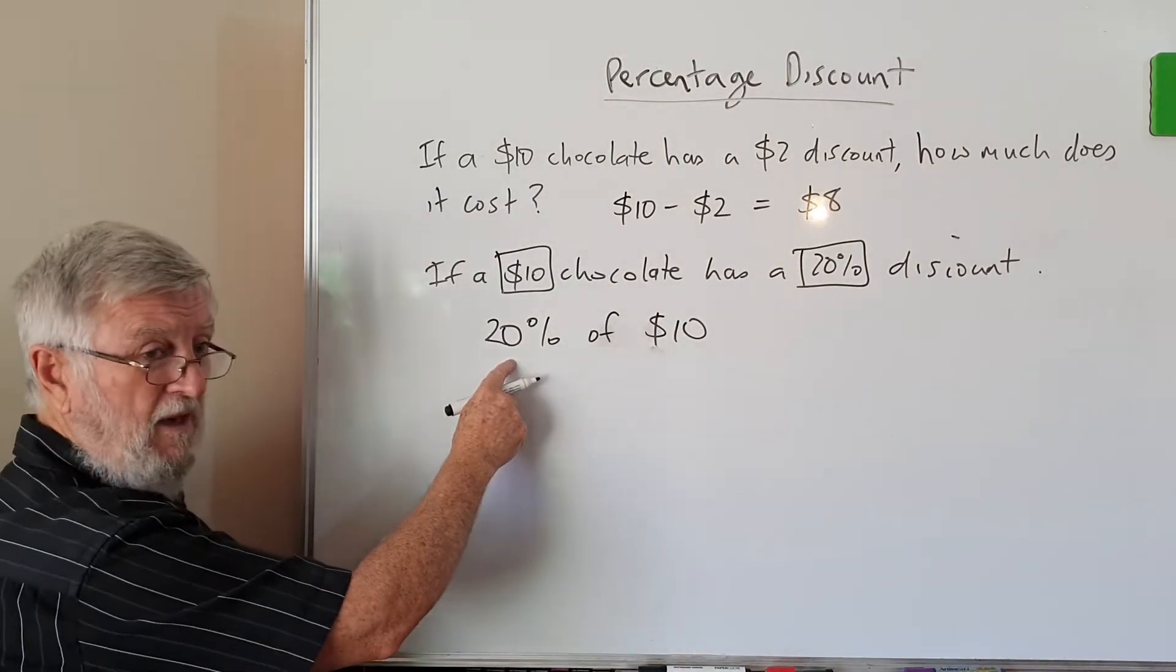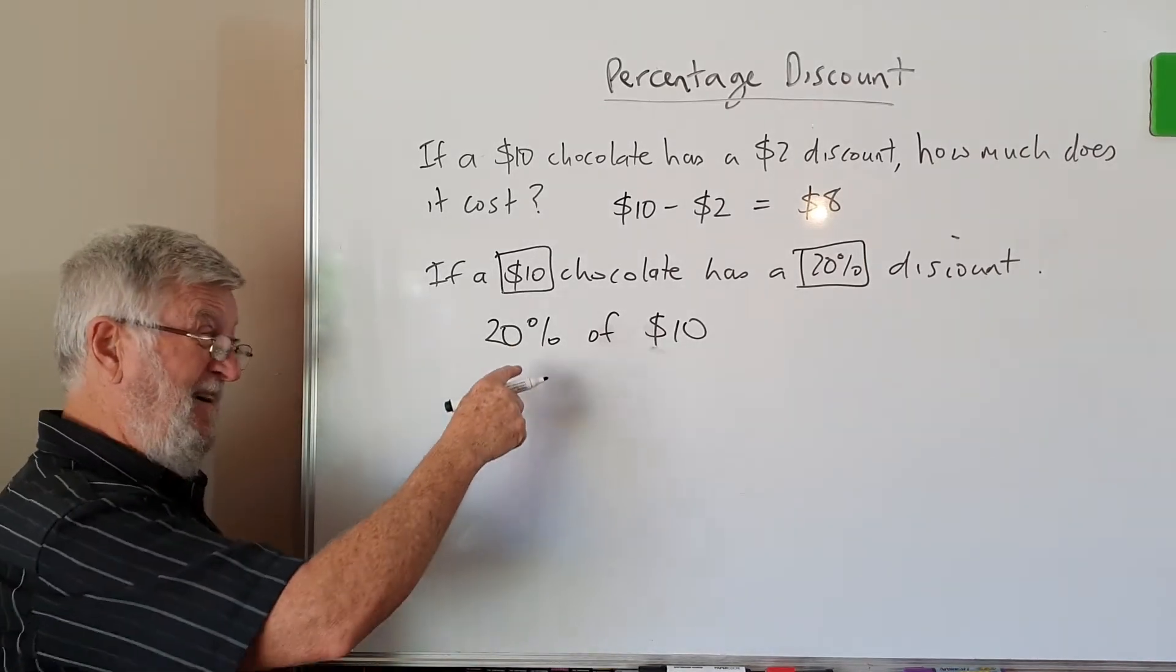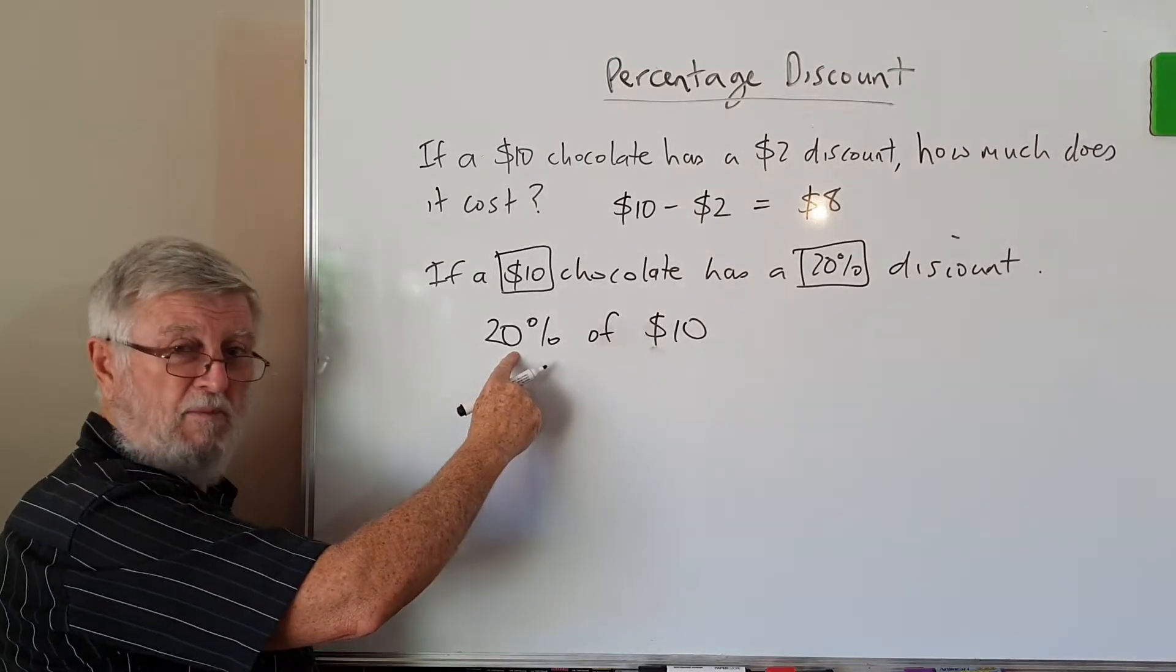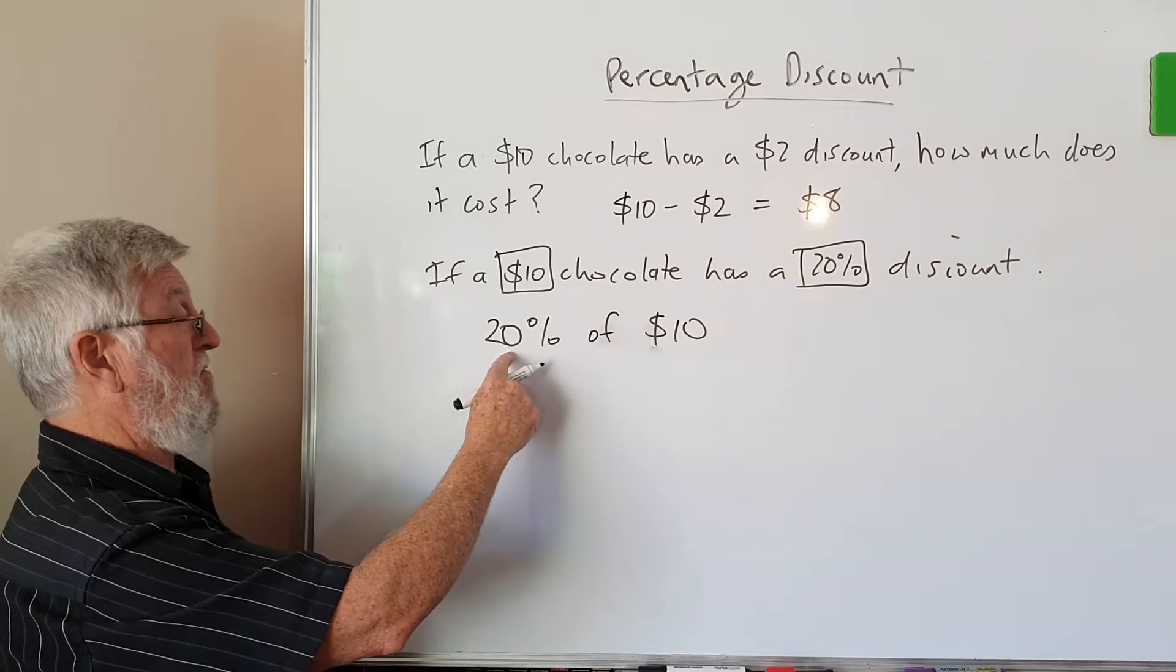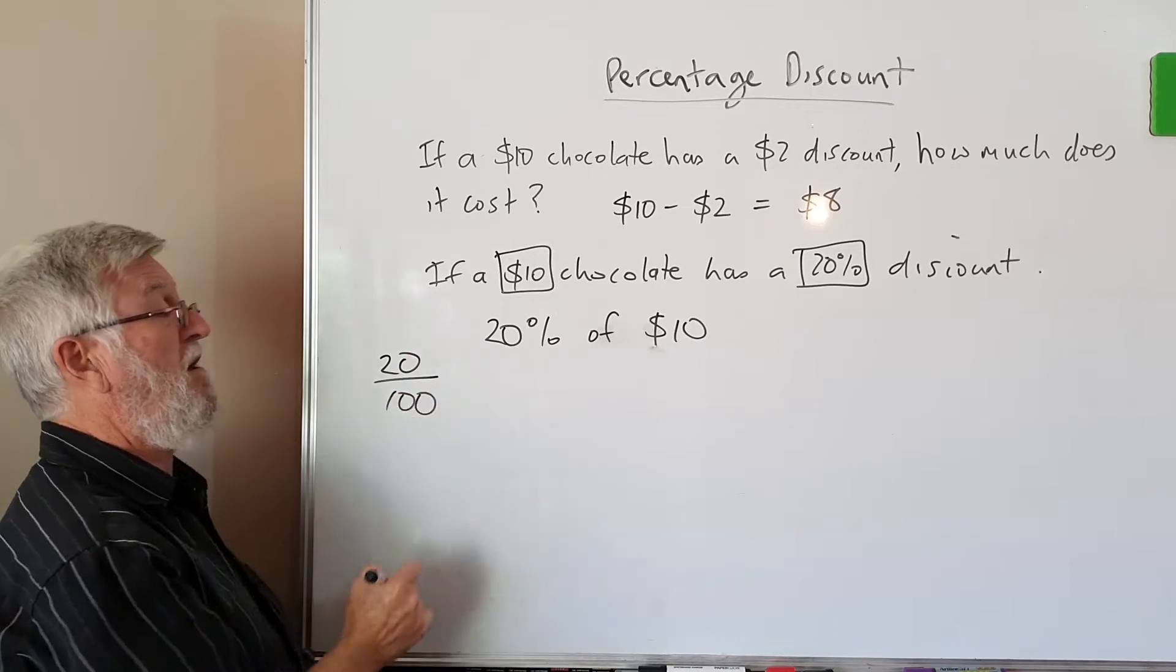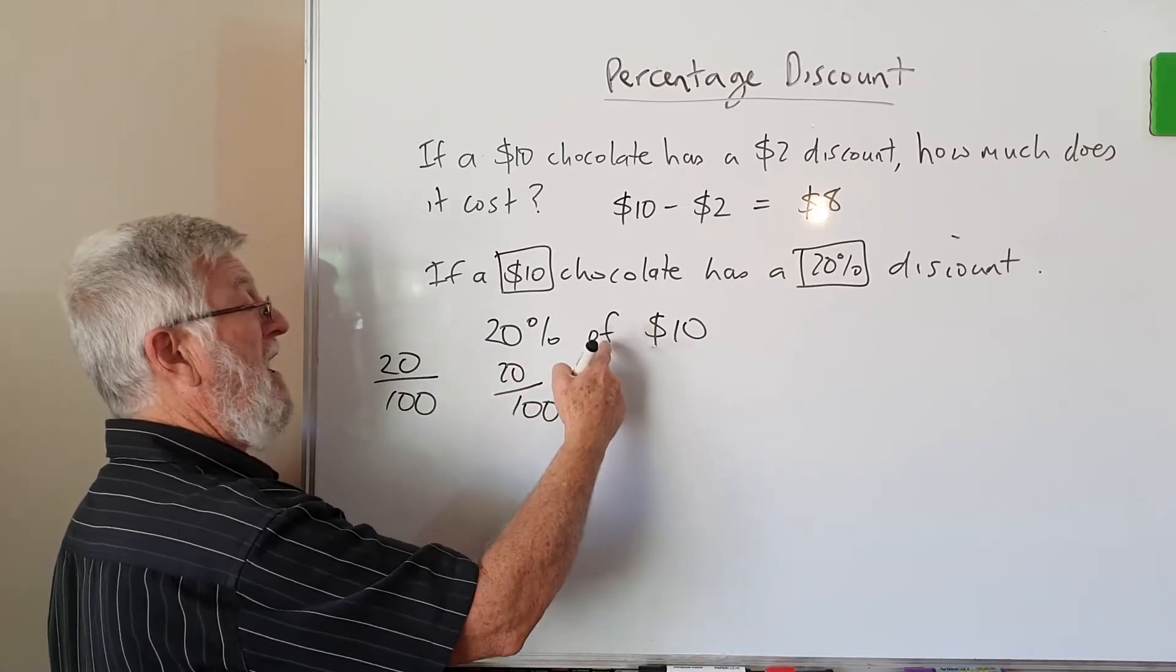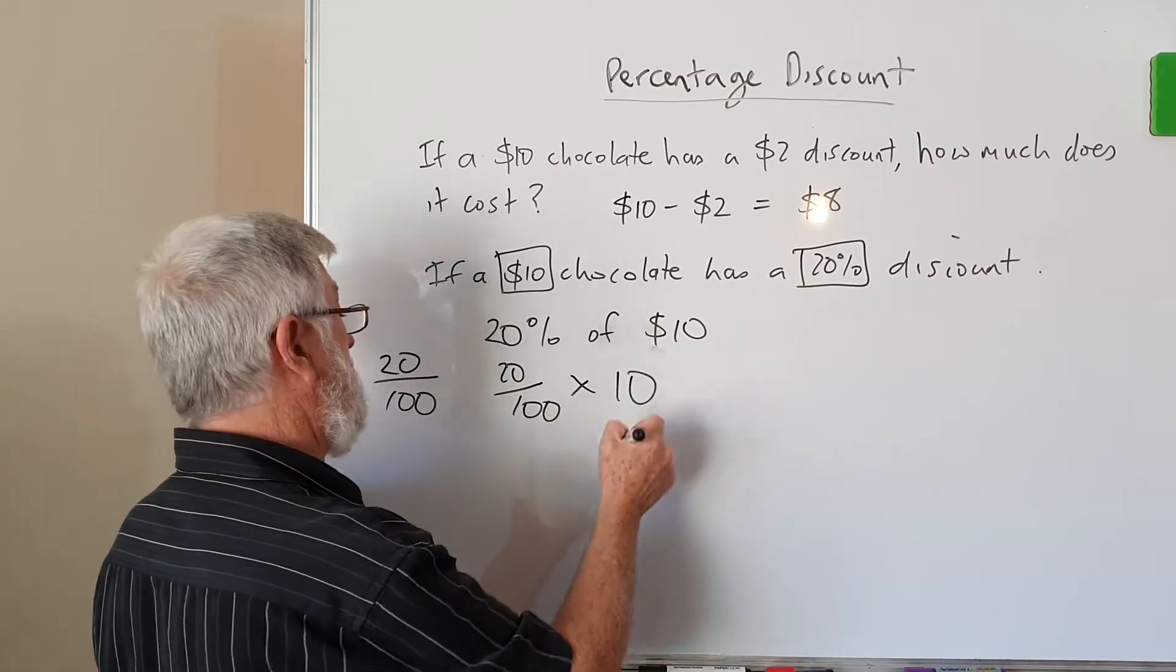Now here's what I keep nagging about. This was on the first video and the second video. How can I write 20%? If my calculator could cope with percentages, I don't have to think about it. I could type in those percentages, but most people don't know how to or their calculators don't do it at this stage. So instead of 20%, I can write 20 over 100. And I'm nagging about 'of' means multiply, which means times.